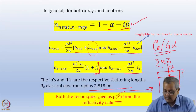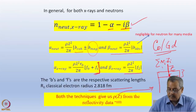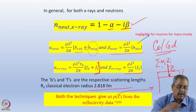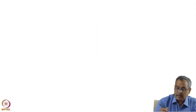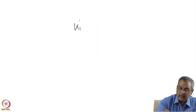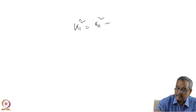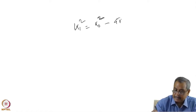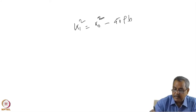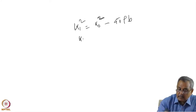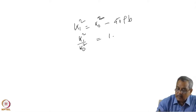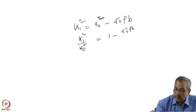Hello, before I go on to the next module, allow me to correct a small mistake that I made. Let me just do it on the board. I found that k1 squared equals k0 squared minus 4π·ρB, so k1 squared divided by k0 squared will be equal to 1 minus 4π·ρB divided by k0 squared.